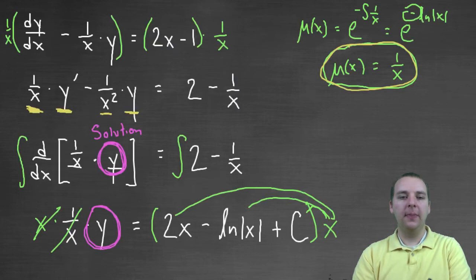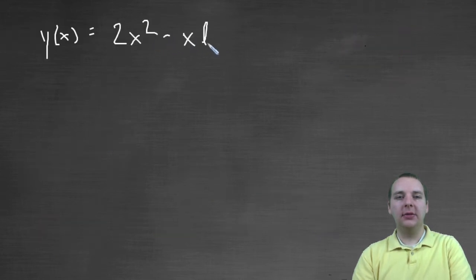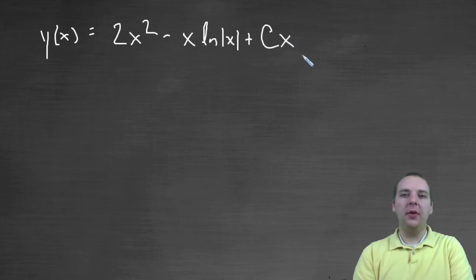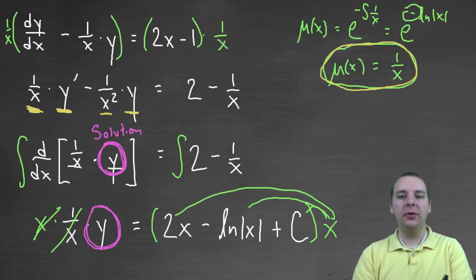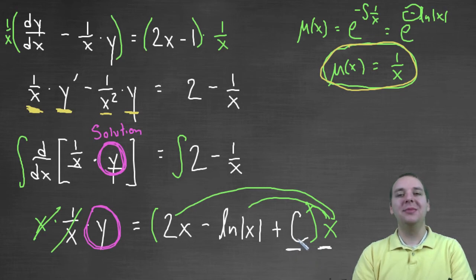So our final answer would be y(x) equals two x squared minus x natural log of the absolute value of x plus c times x. Now for a lot of other problems, you have a constant times a constant, and it stays just plus c, which is a generic constant. That's not applicable here unfortunately, because we don't have a constant times a constant, we have a constant times x.